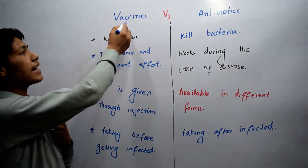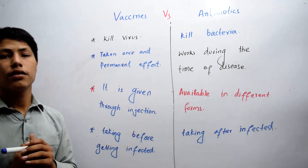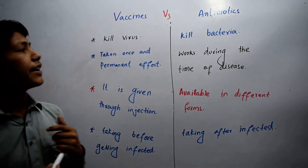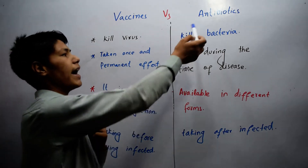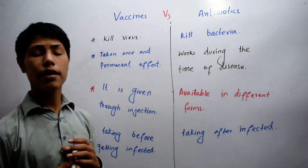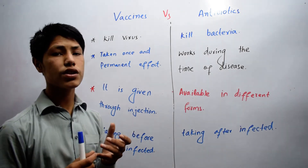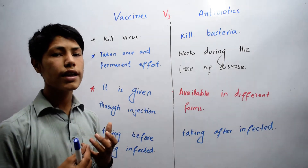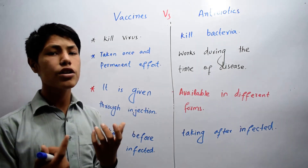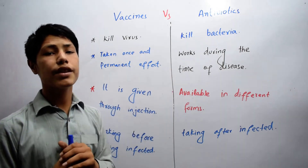So vaccines help us to kill viruses. While on the other hand, antibiotics help us to kill bacteria. Bacteria are also made of a single cell, it has no nucleus, and it may or may not be seen with the naked eye.